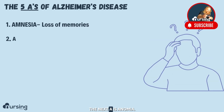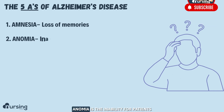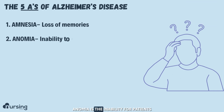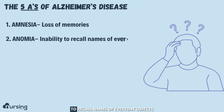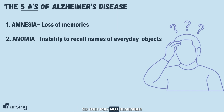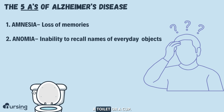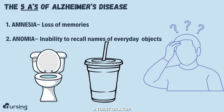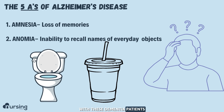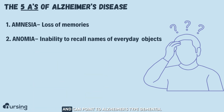The next A is anomia. Anomia is the inability for patients to recall names of everyday objects. So they may not remember a toilet or a cup. This is an occurrence that happens with these dementia patients and can point to Alzheimer's type dementia.